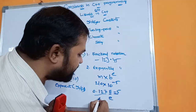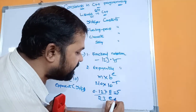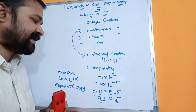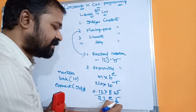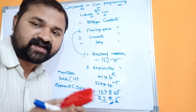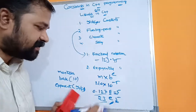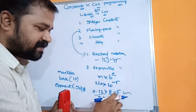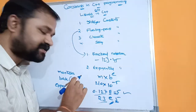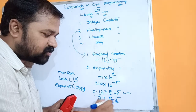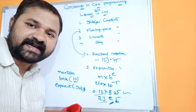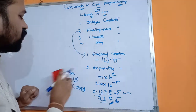We can also write lowercase e instead of capital E. For example, 23E5: here 23 is the mantissa, 5 is the exponent, and the base is not specified so 10 is considered. The exponent value may be either a positive or negative integer, but it should not be a floating point number. This is about floating point constants.